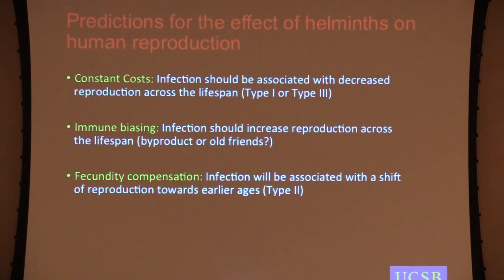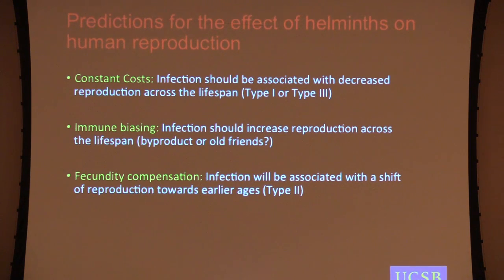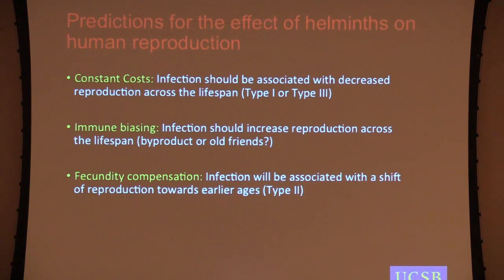We might have different predictions about the effects of helminths on human reproduction depending on what sort of parasite they are. These helminths can't reproduce inside the host — they have a life cycle stage outside the host. So you wouldn't necessarily expect increasing costs with time, though they are very long-lived — one to ten years. If there are constant costs, we'd see reproduction going down whenever individuals are infected. If infections are shifting immunity without much cost, we might see increases in reproduction or ability to conceive. Or if there are increasing costs, we might see fecundity compensation — a shift in reproduction towards earlier ages.